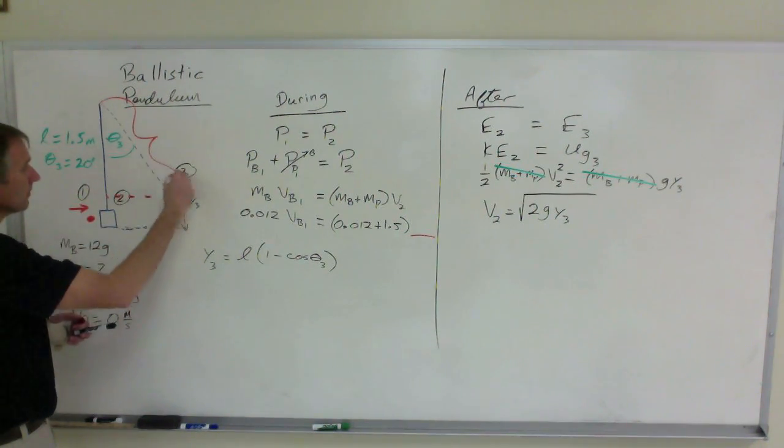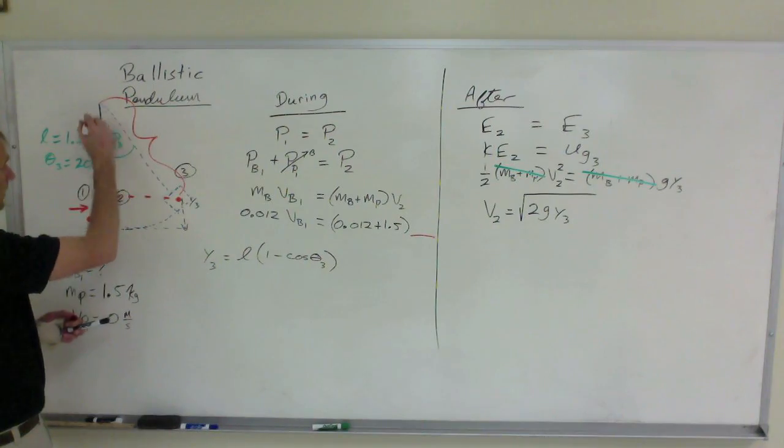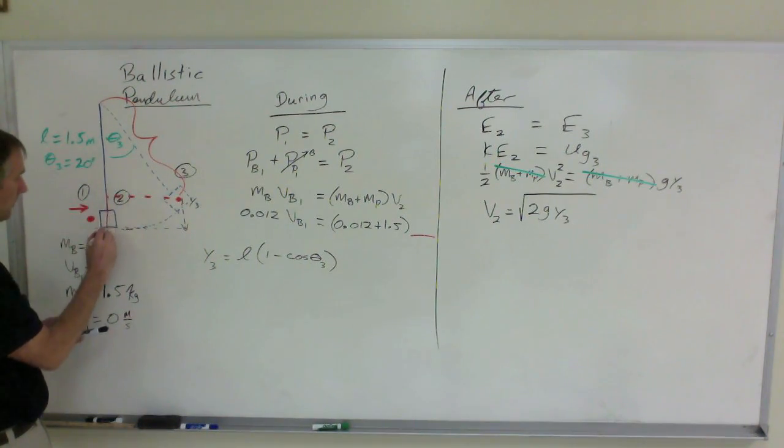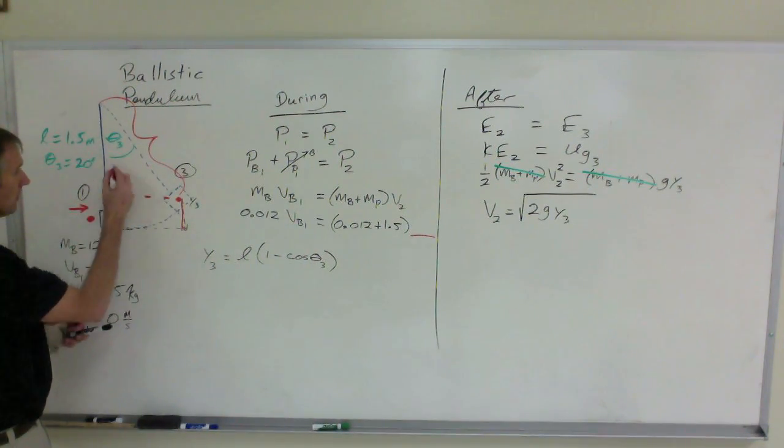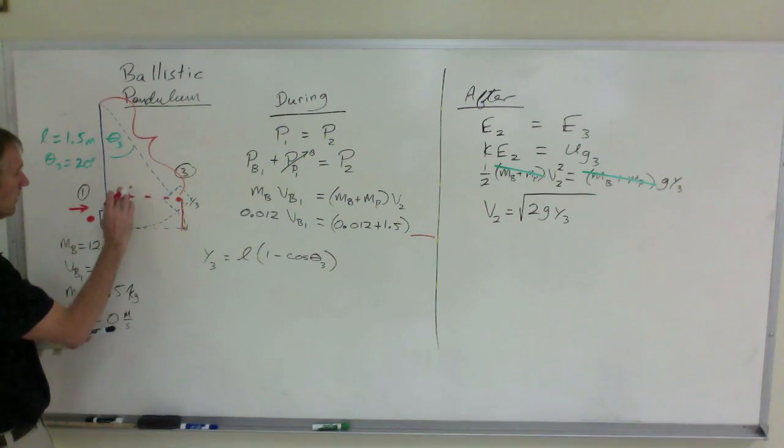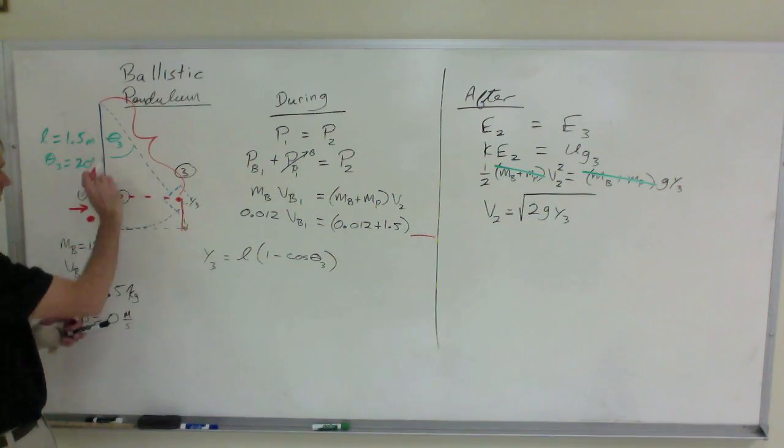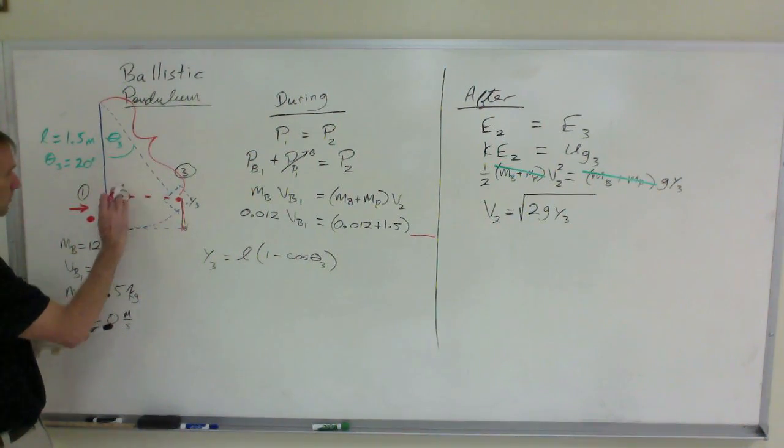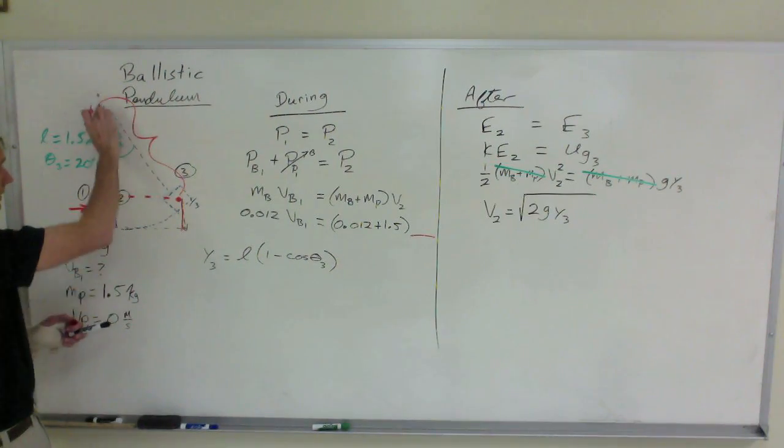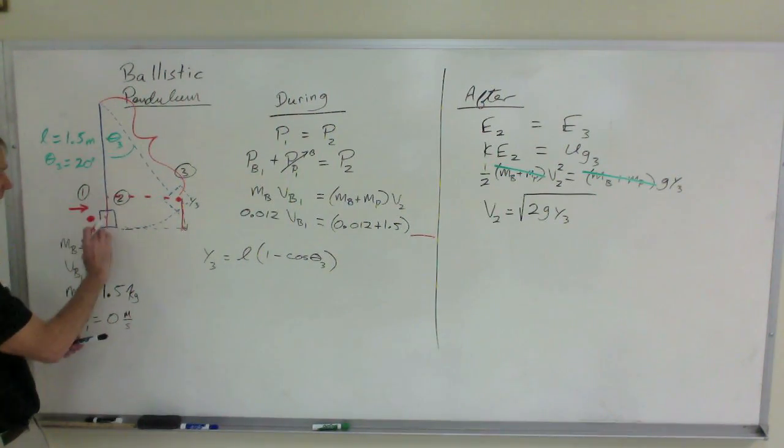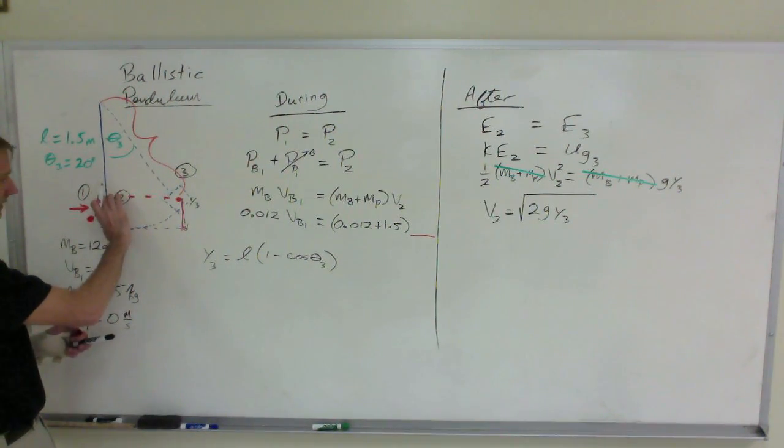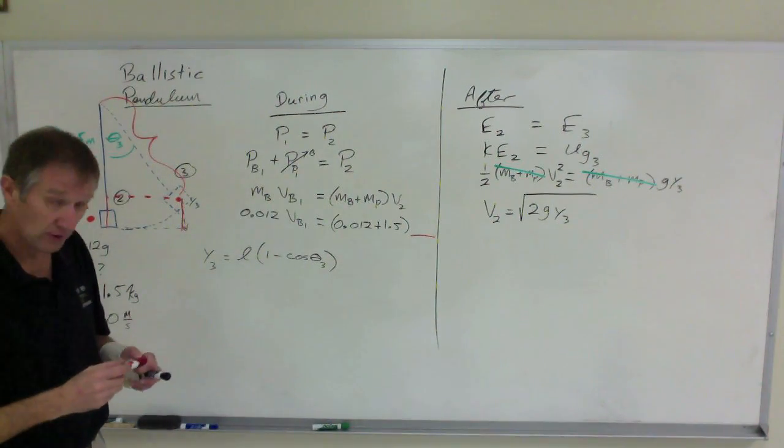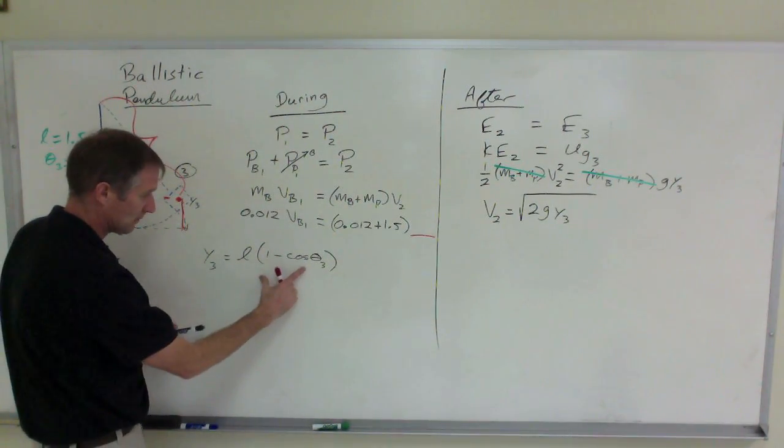Where that is L, same length as from here to here. We're looking for this height here. Cosine of theta three equals this blue line divided by L, adjacent over hypotenuse. And then we subtract it from the overall length, L. Subtract that blue line length from the overall length to get that. Again, that's a proof I will have done in class. And we end up with this.